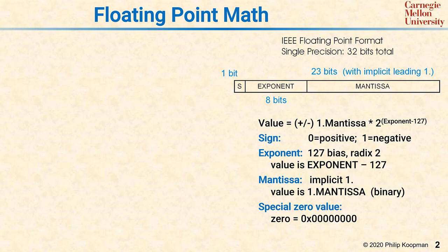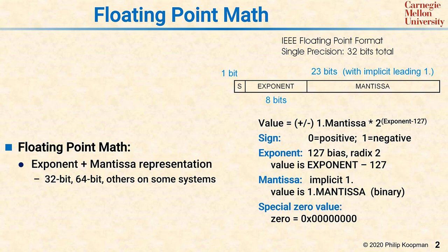In floating-point math, the general idea is that there's an exponent plus a mantissa representation. The 32-bit format we just discussed is quite common, but there's a 64-bit version that looks pretty much the same, follows the same rules, except the exponent and the mantissa have more bits in them. A significant issue with floating-point math is that you can get round-off errors, because there are only so many bits, and we'll see how that plays out in subsequent slides.